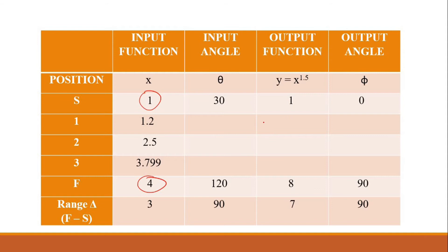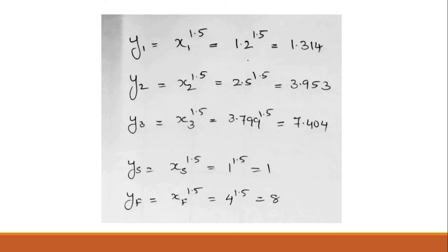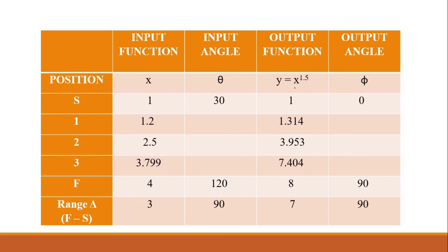Now we find the y component. Since y = x^1.5: y1 = 1.2^1.5, y2 = 2.5^1.5, and y3 = 3.799^1.5. The Chebychev spacing equation is only used to find these three x values, and from x we compute the three corresponding y (output function) values.